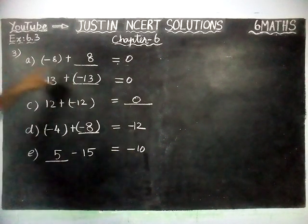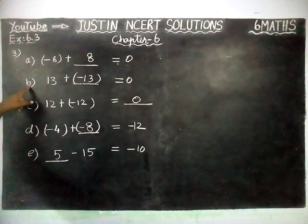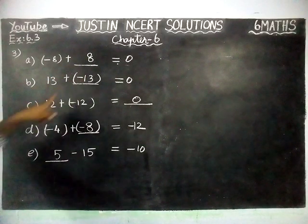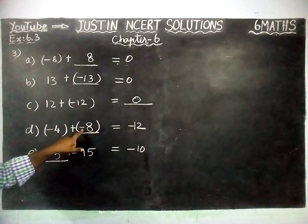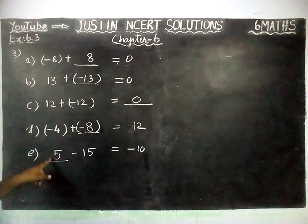So for the first question, part A, plus 8 is the answer. Part B, minus 13 is the answer. Part C, 0 is the answer. Part D, minus 8 is the answer. Part E, 5 is the answer.